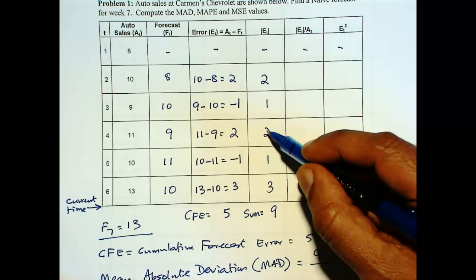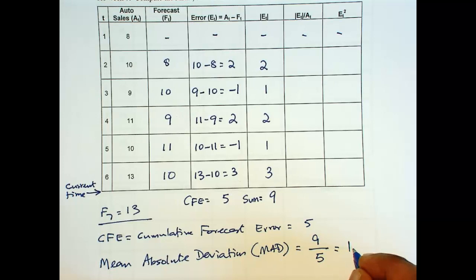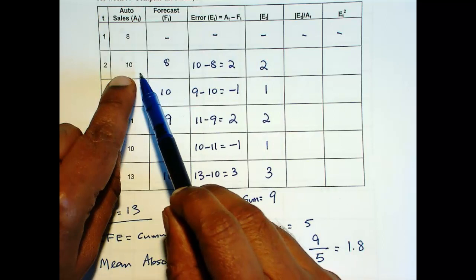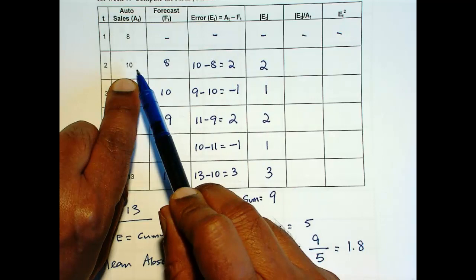Now when you take the error and divide the absolute error by the actual value, then what you get is error as a proportion of actual sales. And that will give us an error measure that is free of units. So you get 2 over 10 is 0.2.